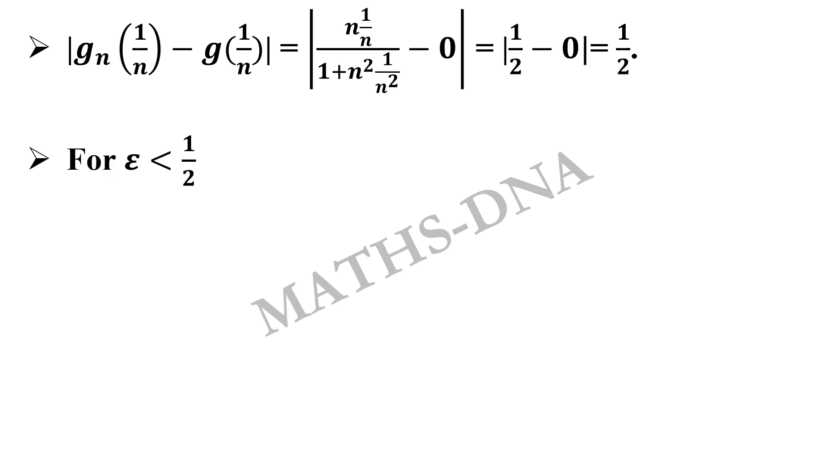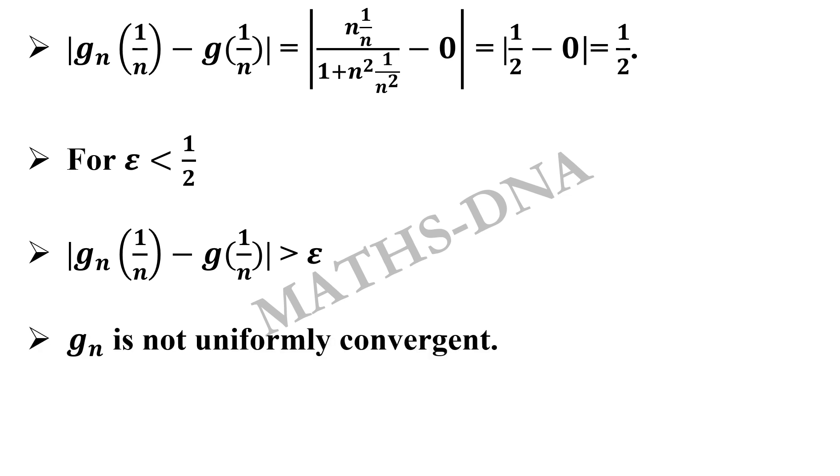So for epsilon less than 1 by 2, we got this value as 1 by 2. So for all the values of epsilon that are less than 1 by 2 and n greater than 0, g_n of 1 upon n minus g of 1 upon n is always greater than epsilon, and thus g_n is not uniformly convergent.